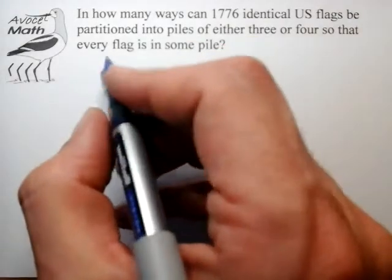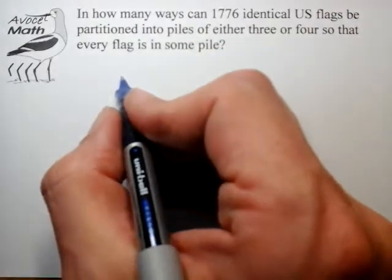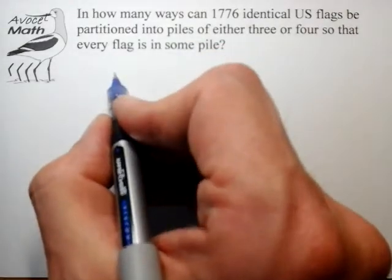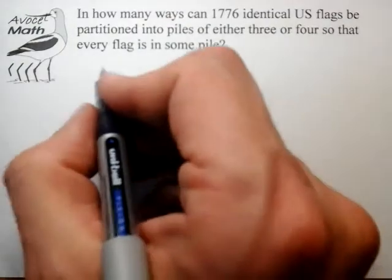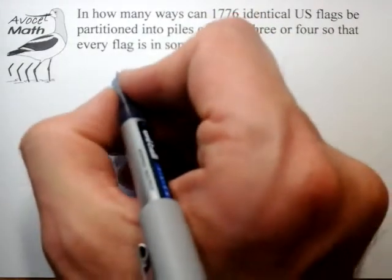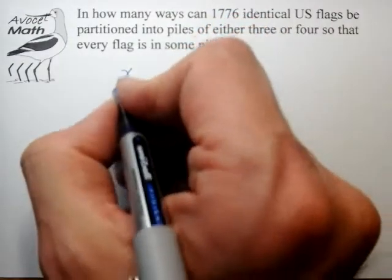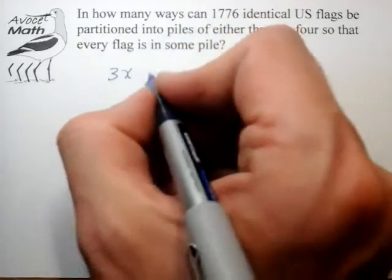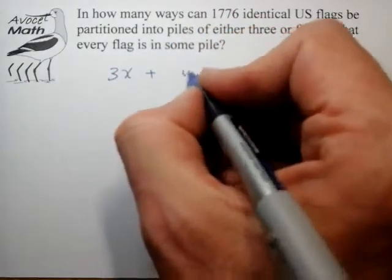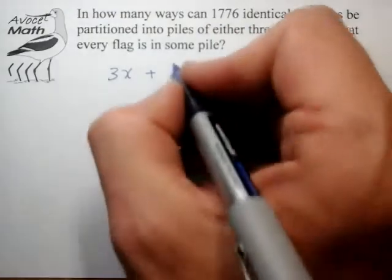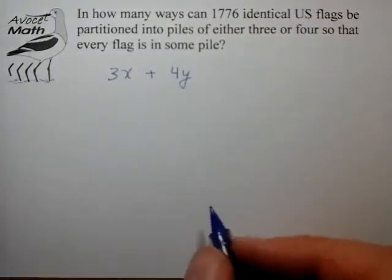Let's break this down. We have two piles: piles of 3 and piles of 4. In the piles of 3 we have x number of piles, and each pile has three flags. In the piles of 4 we have y such piles, and each pile contains 4 flags.